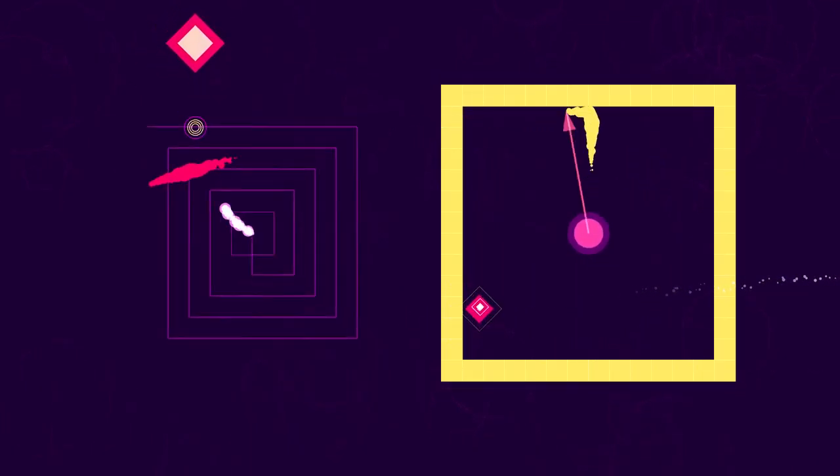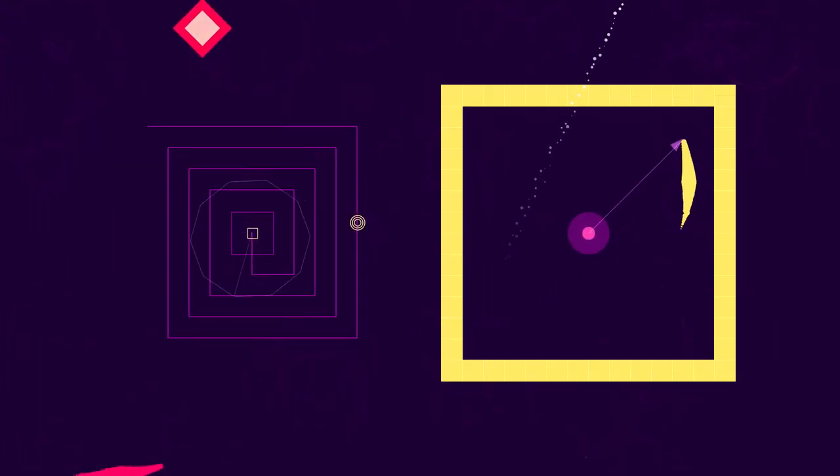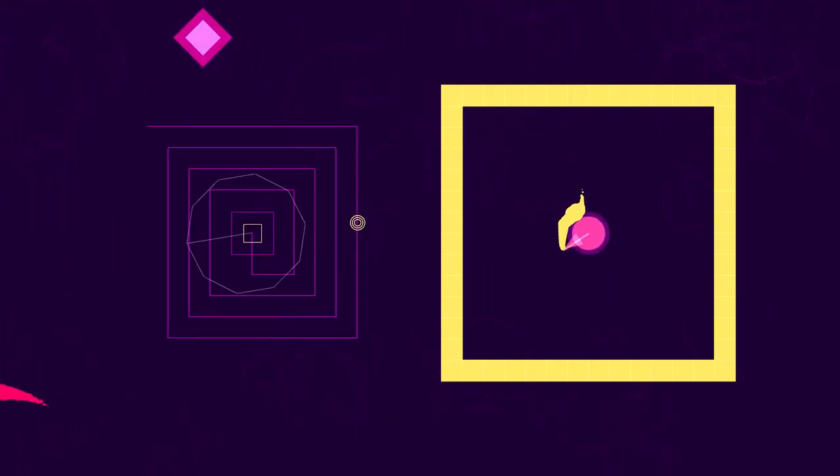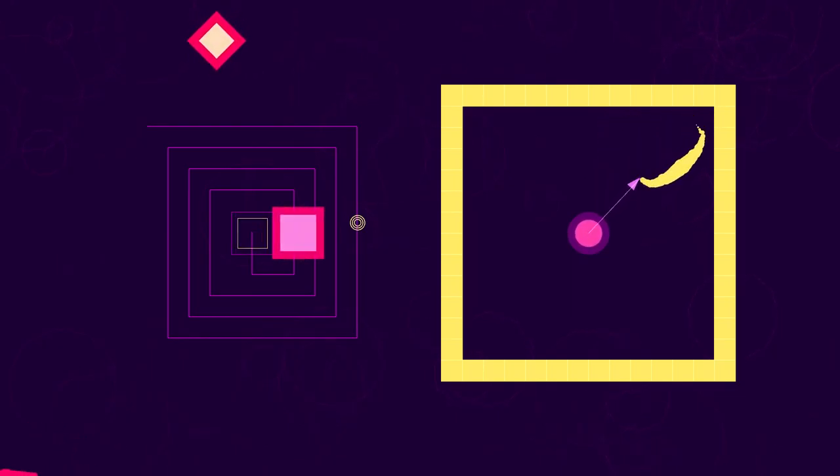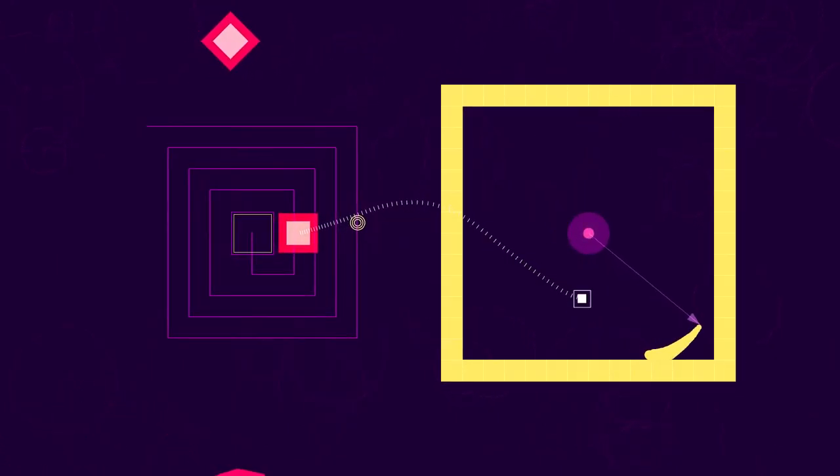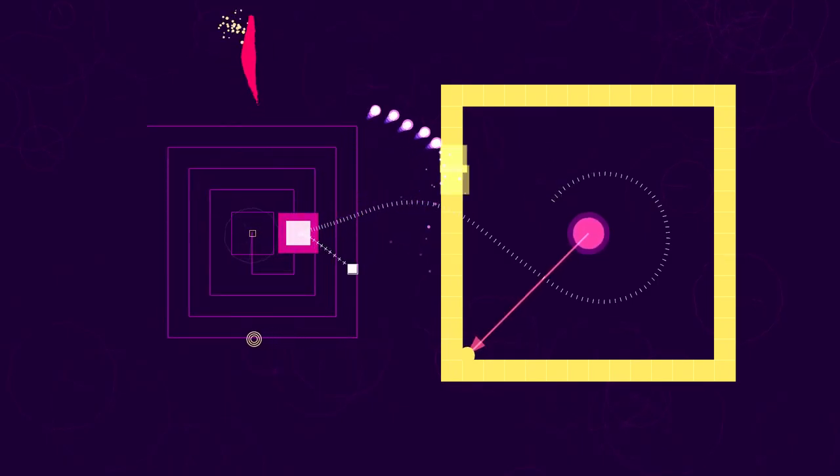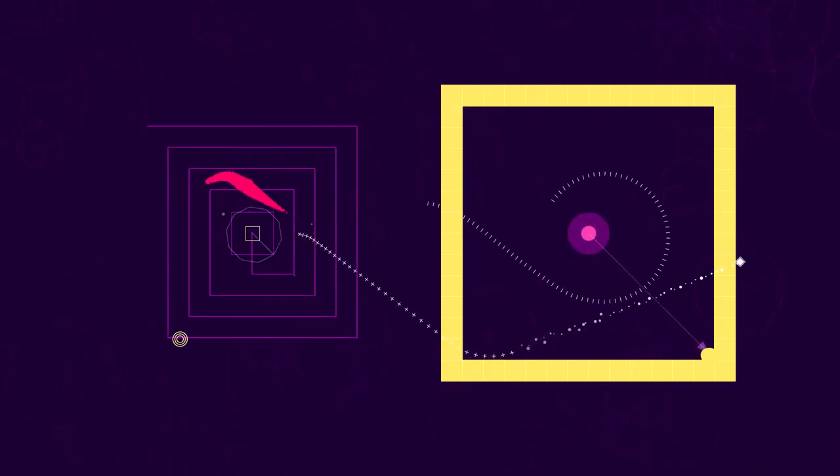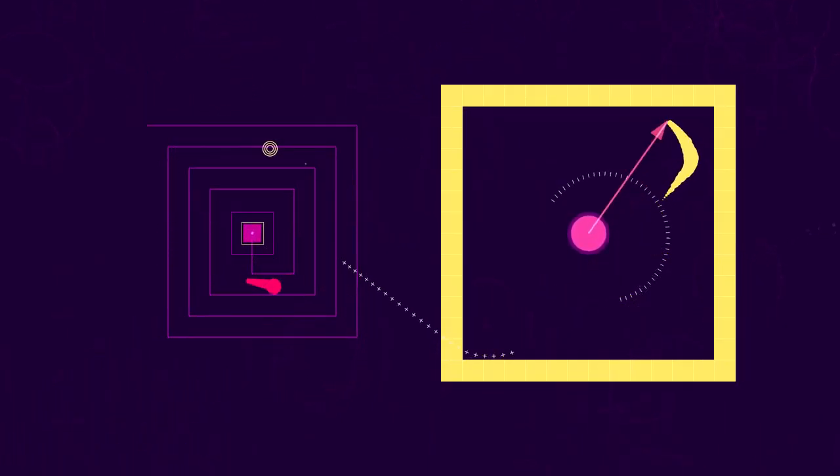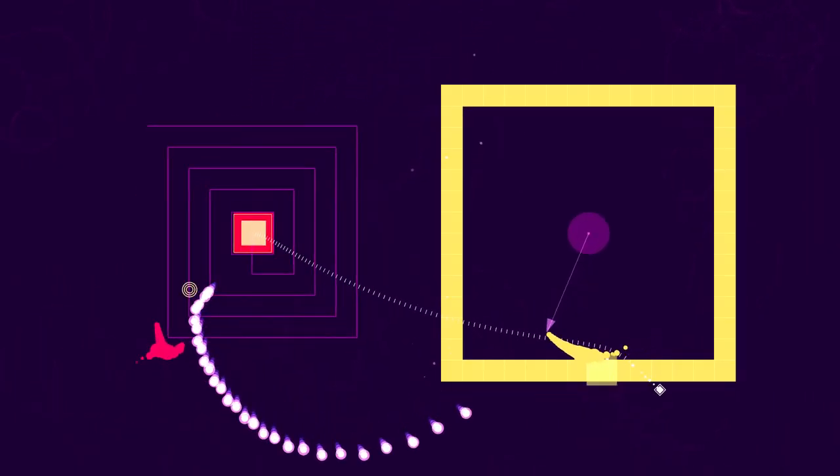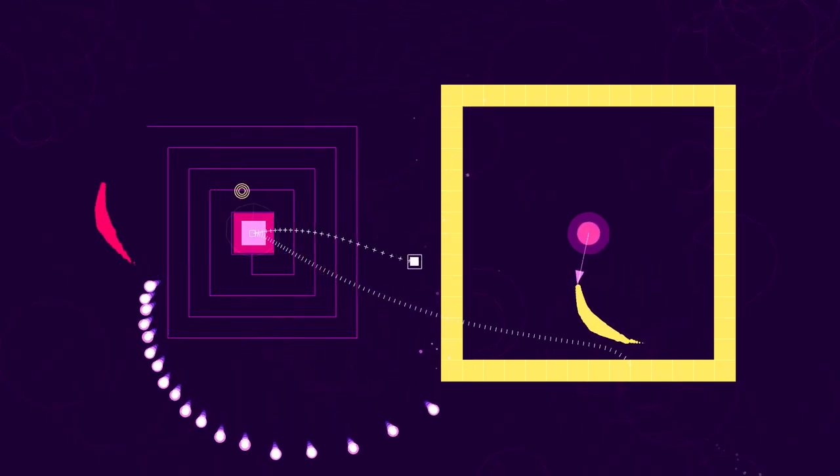This is when things can take a turn for the scary. Controlling two things at once. We're in Brothers A Tale of Two Sons. Is that the name of the game? The game where you control two things with analog sticks. One with the left stick, one with the right stick.